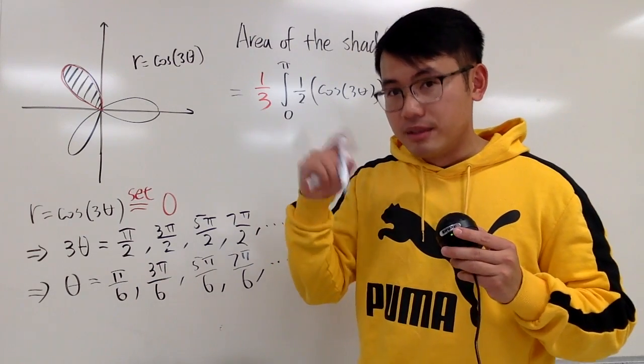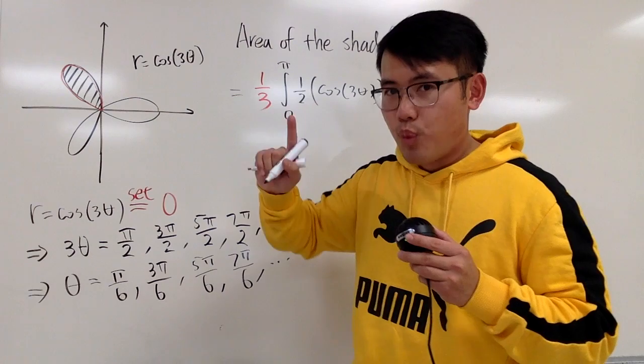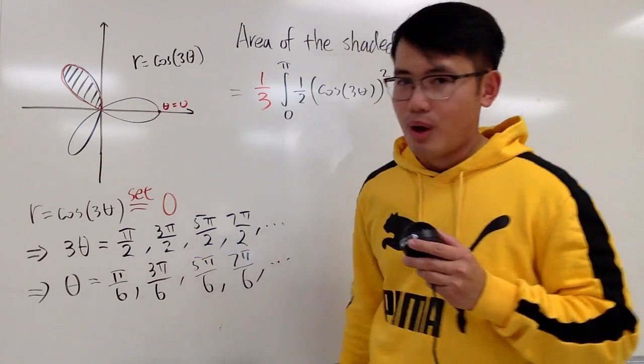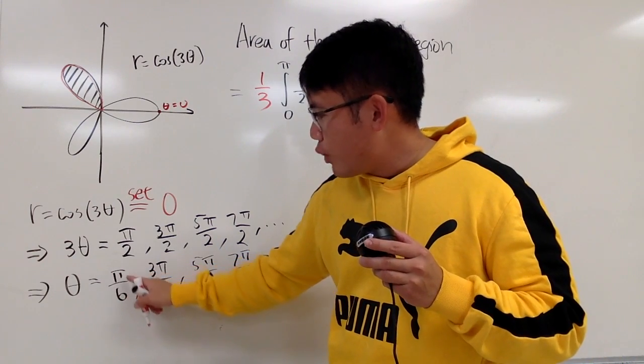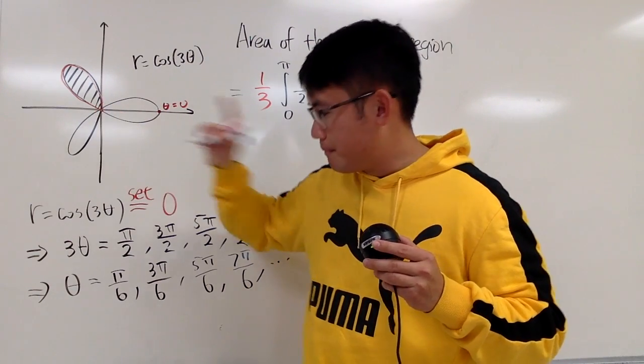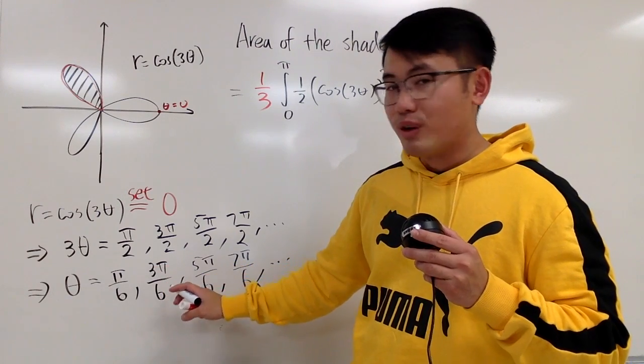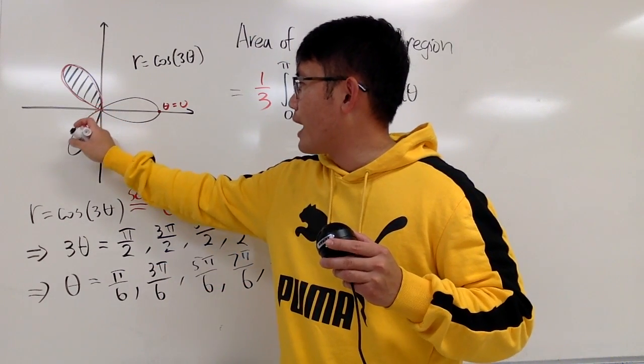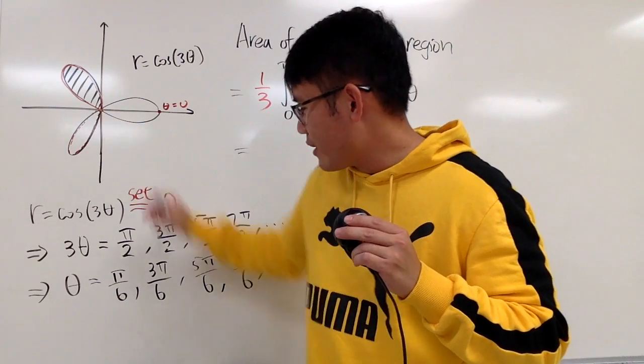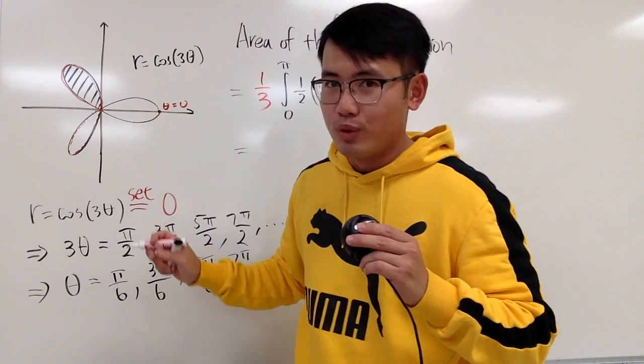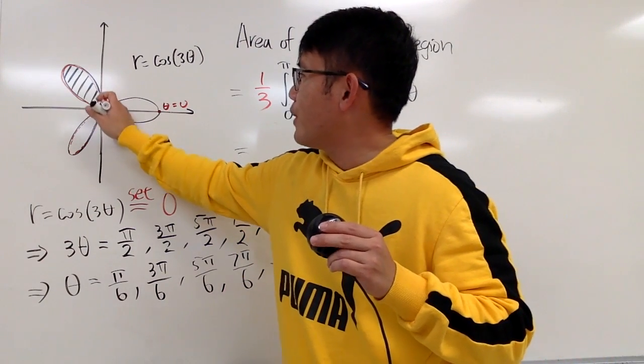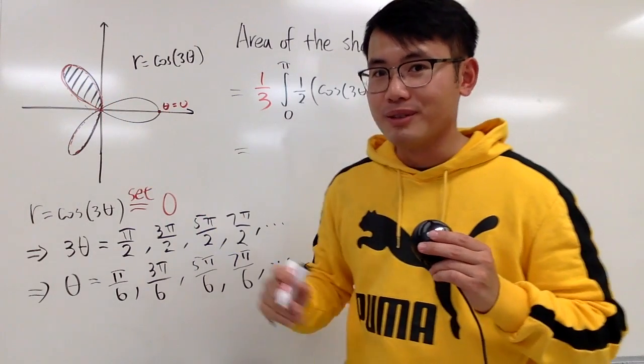Well, when theta is 0, cosine of 0 is 1. So in fact, the first angle for you is right here. This is when theta is equal to 0. And then, when you have pi over 6, you go from here, and then you end up with the origin. But next, when you have 3 pi over 6, in fact, you actually go right here, and then you have to go back to the origin. So right here, 3 pi over 6, that will get you back to origin as well. And then next, from 3 pi over 6 to 5 pi over 6, you actually go travel this loop right here, and you do close that loop.